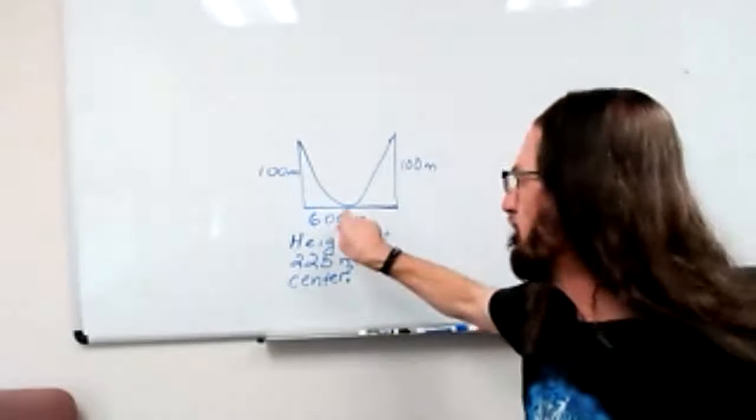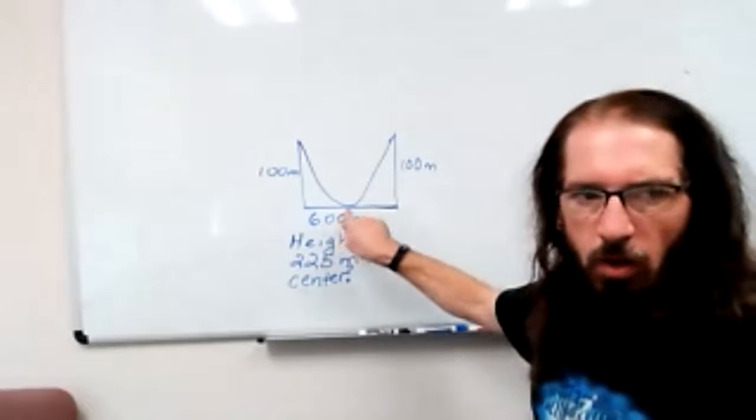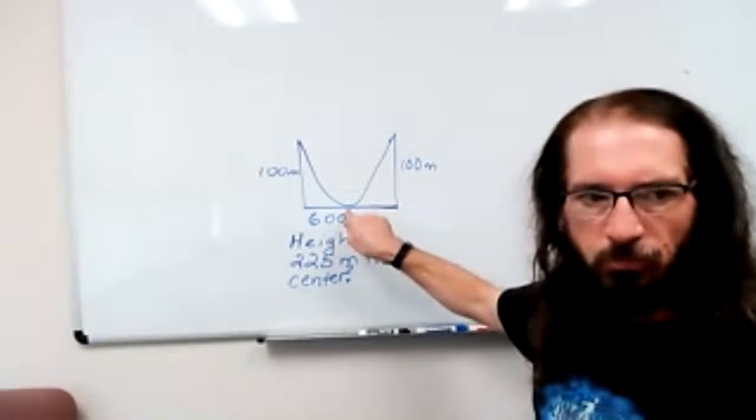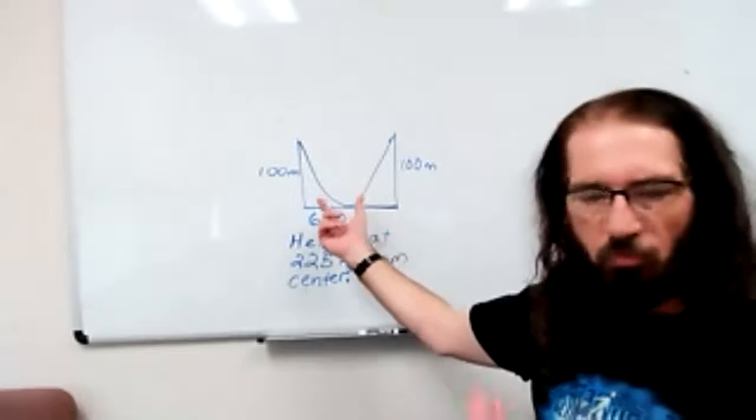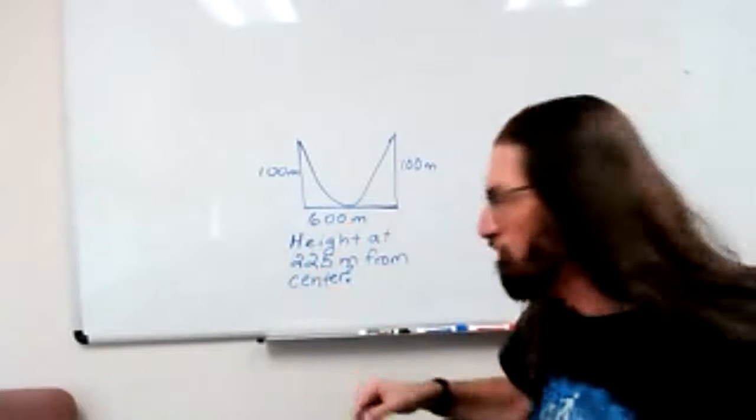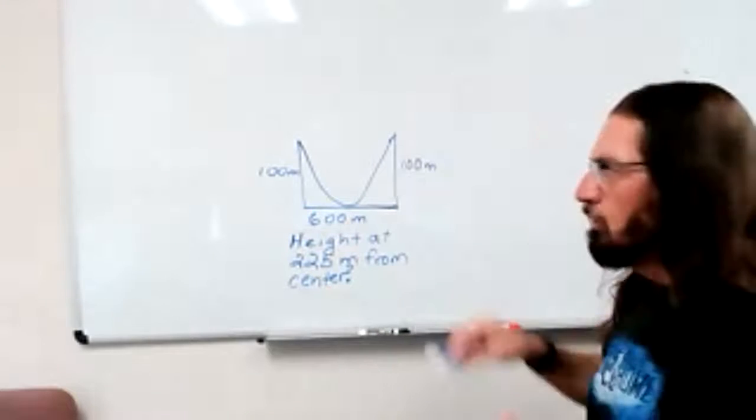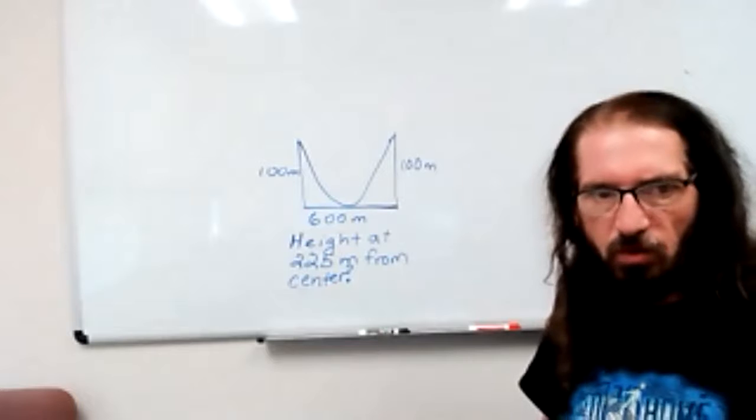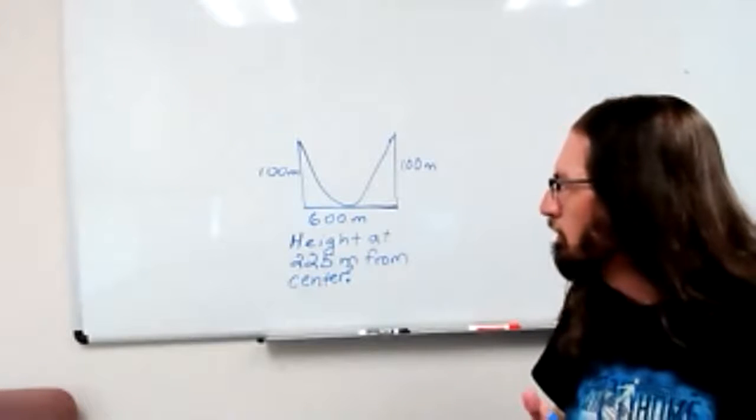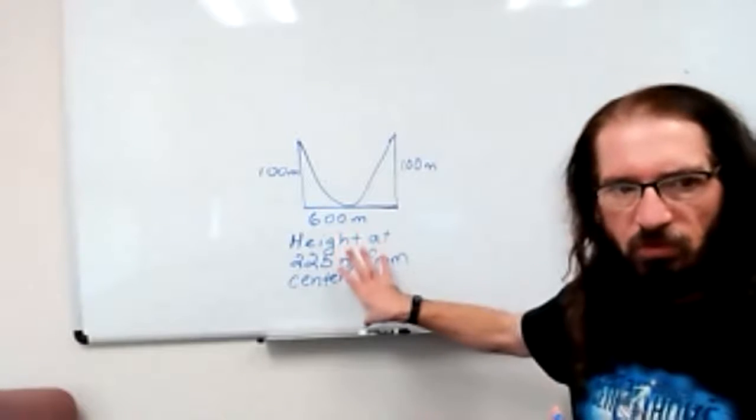Now this 225 meters from the center could be in either direction because we're talking about a parabola and that is symmetric. What we're forced to do here is set up a coordinate system so that we can compute this.